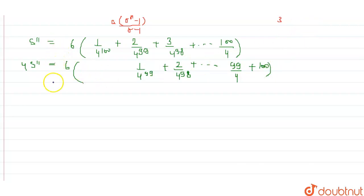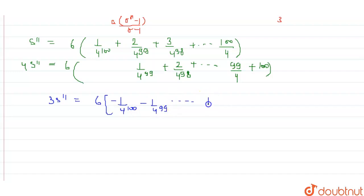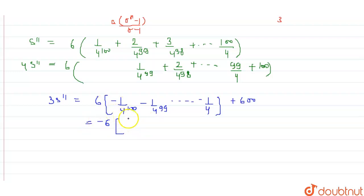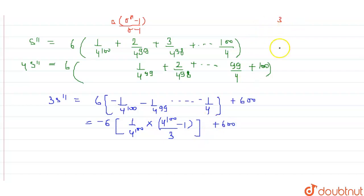Subtracting the original series from 4·S double dash gives 3·S double dash. This equals 6 times: minus 1 upon 4 to the power 100, minus 1 upon 4 to the power 99, and so on minus 1 upon 4, plus 100. That trailing term gives 6 times 100 = 600. Applying the GP sum formula to the negative geometric part: 6 times minus (1 upon 4 to the power 100) times (4 to the power 100 minus 1) divided by 3, plus 600.